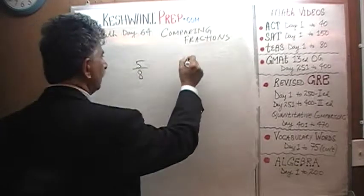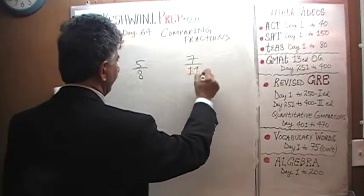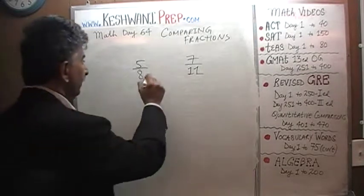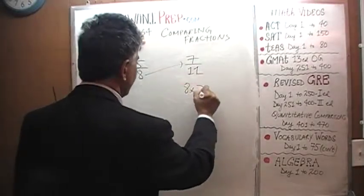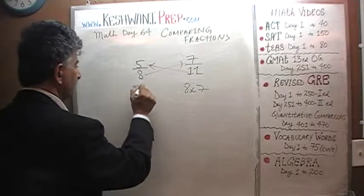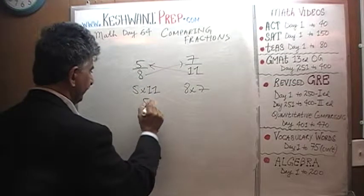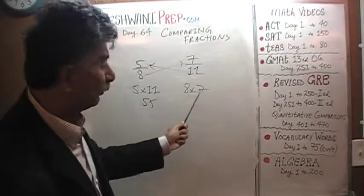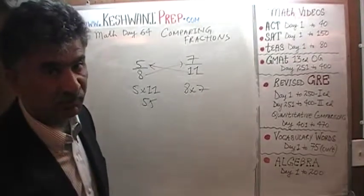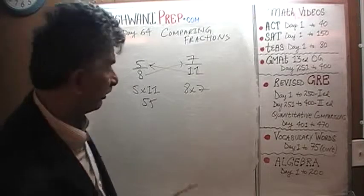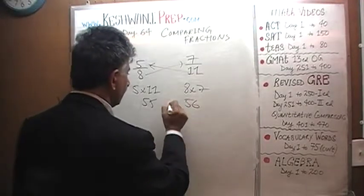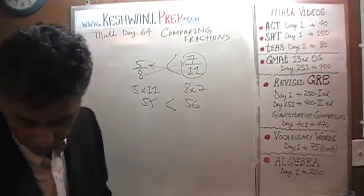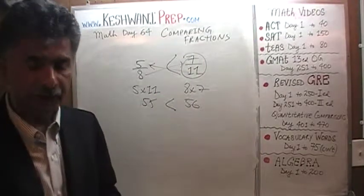5/11 versus 8/7 — which one is bigger? Now that we know the process it's very simple — it only takes 10 seconds. 8 times 7 is 56, and 5 times 11 is 55. Since 56 is more than 55, therefore 8/7 is bigger. That's it — we're done. I'll see you tomorrow, bye now.